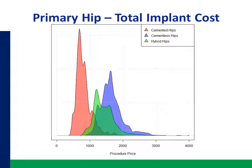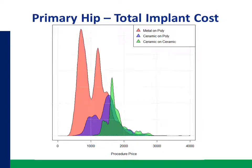When these costs are aggregated to look at procedure level, it provides a picture of the national distribution of procedure level costs of implants. This can be segmented by fixation type — looking at cemented, cementless and hybrid primary hips — or segmented by bearing surface, looking at metal on poly versus ceramic on poly and ceramic on ceramic.